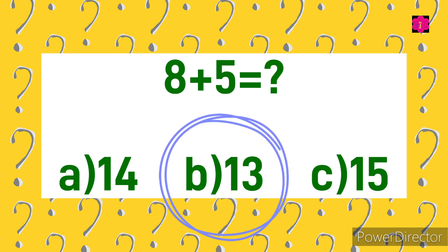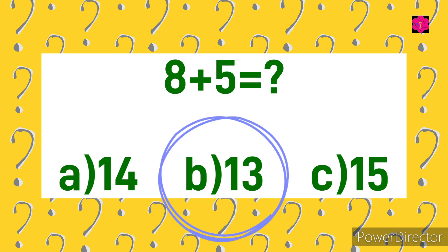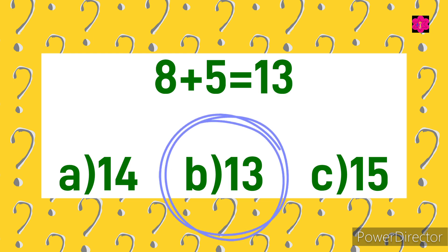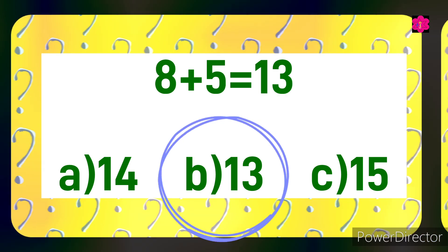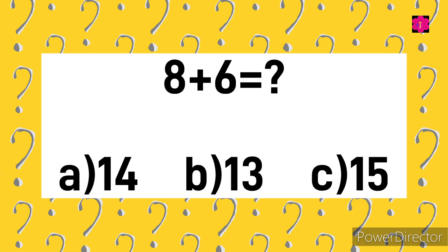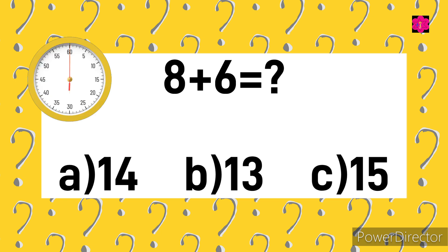The correct answer is B) 13. 8 plus 5 is equal to 13. Next: 8 plus 6 is equal to? Your options are A) 14, B) 13, and C) 15. Your time starts now.